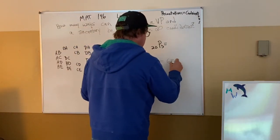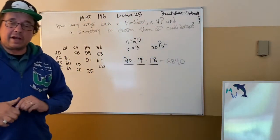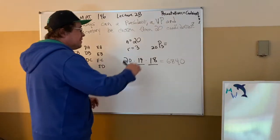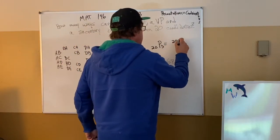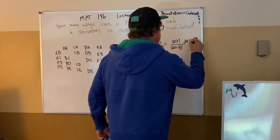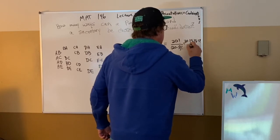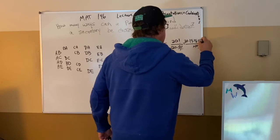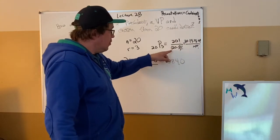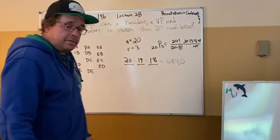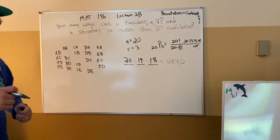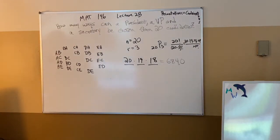Other ways to get it: 20 factorial over (20 minus 3) factorial — that's 20 factorial over 17 factorial — gives 20 times 19 times 18. On a graphing calculator, you can enter 20, go to math, probability, select NPR, enter 3, and get the answer. That's a permutation. Permutation is probably a new word for most people.